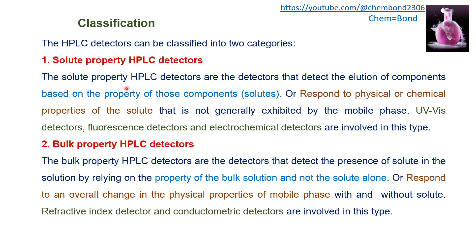HPLC detectors are classified into two categories: solute property HPLC detectors and bulk property HPLC detectors. In solute property HPLC detectors, the response depends upon the solute and not on the mobile phase — it measures a property of the solute that is not exhibited by the mobile phase. These detectors detect the elution of components based on the physical or chemical properties of those solutes. UV-visible detectors, fluorescence detectors, and electrochemical detectors are included in this type.